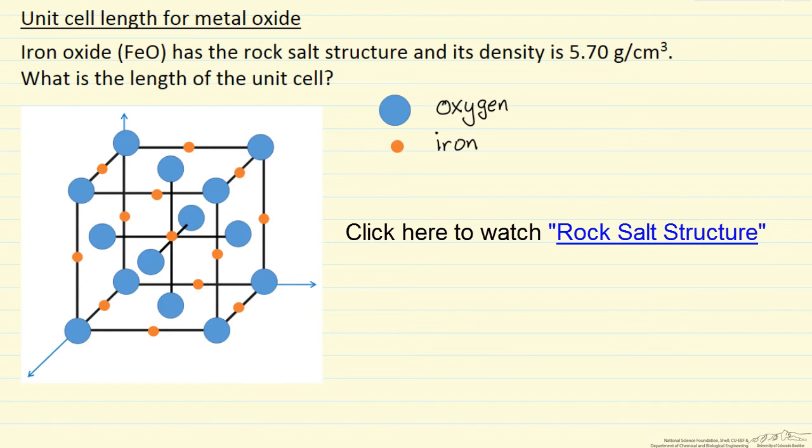and there's another screencast that describes the rock salt structure. The corner atoms of this cube and on the faces are oxygen. The smaller iron atoms are located on the faces and in the center in octahedral sites, and the stoichiometry is one to one.